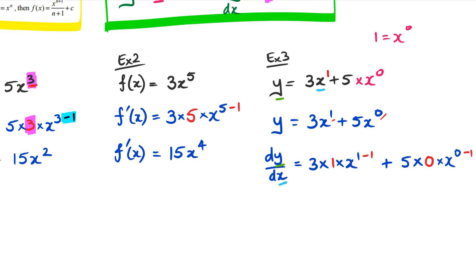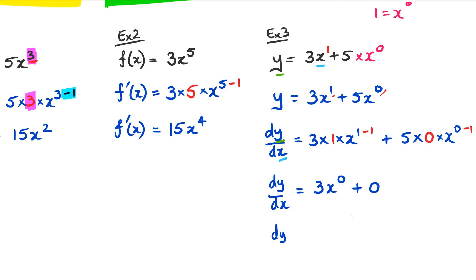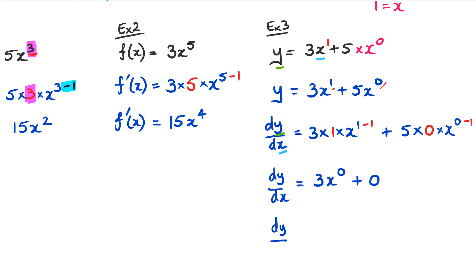Now what you'll notice that's happened here is that we're going to rewrite this as dy dx. And we're going to simplify it. So we've got 3 times 1, which is 3. And then x to the power of 1 minus 1 is x to the power of 0. And then we've got plus 5 times 0 times x. Well, that's 0 because any number times 0 is equal to 0. So then we can simplify this as because x to the power of 0 is equal to 1, we can say that dy dx is just equal to 3.